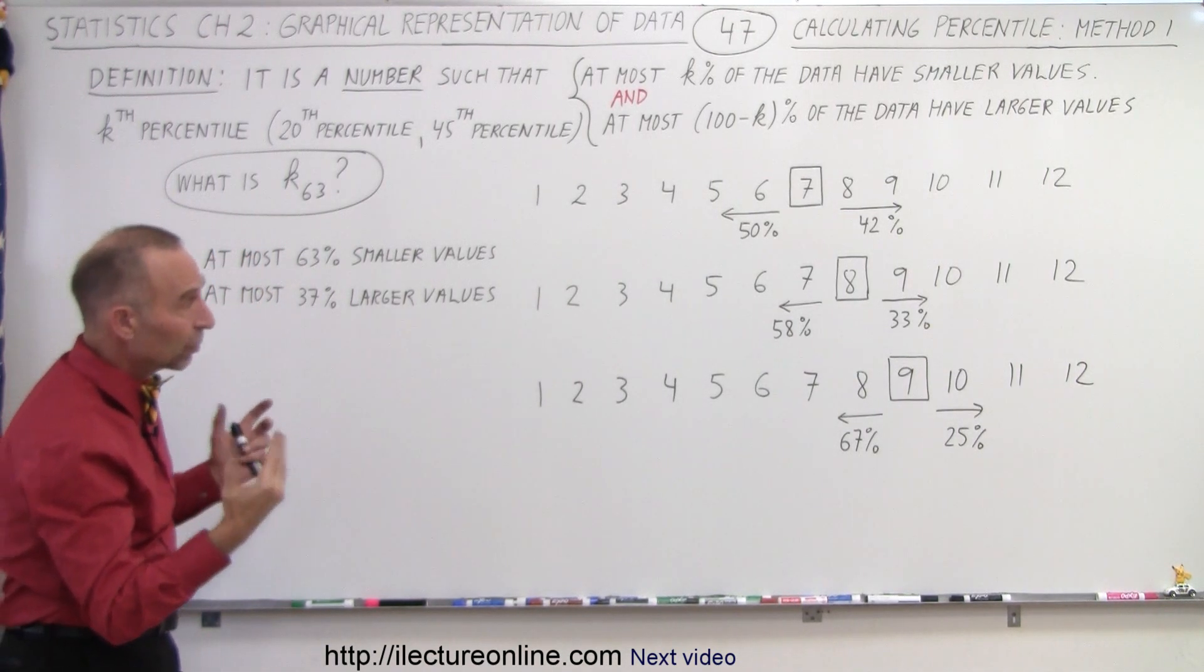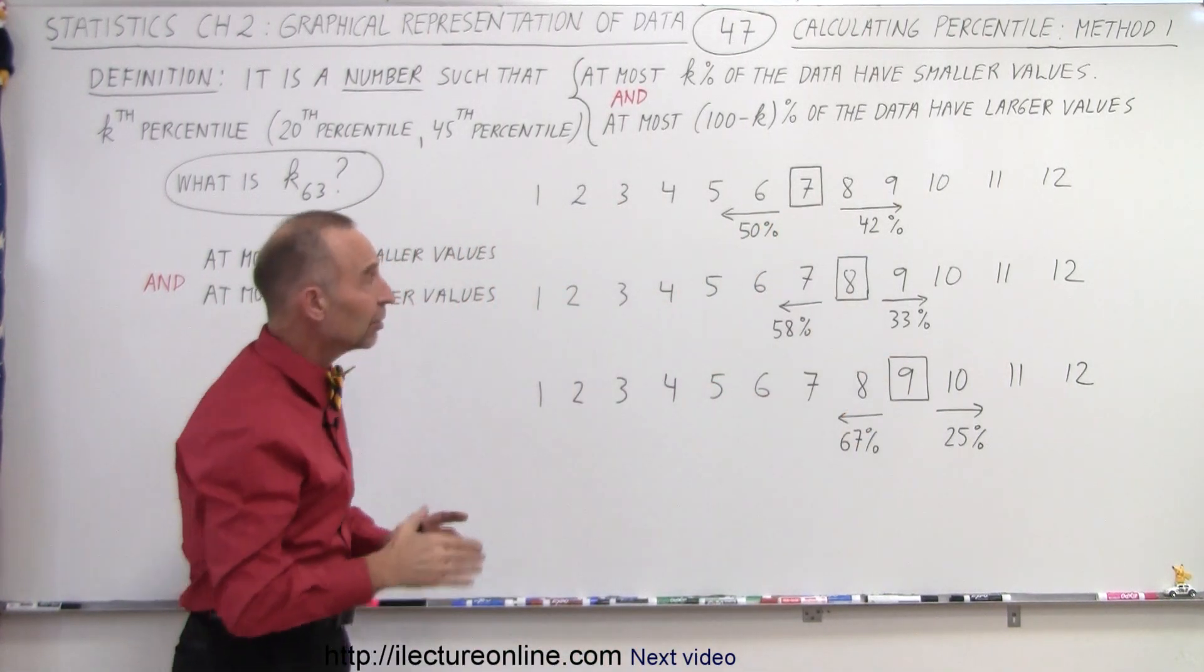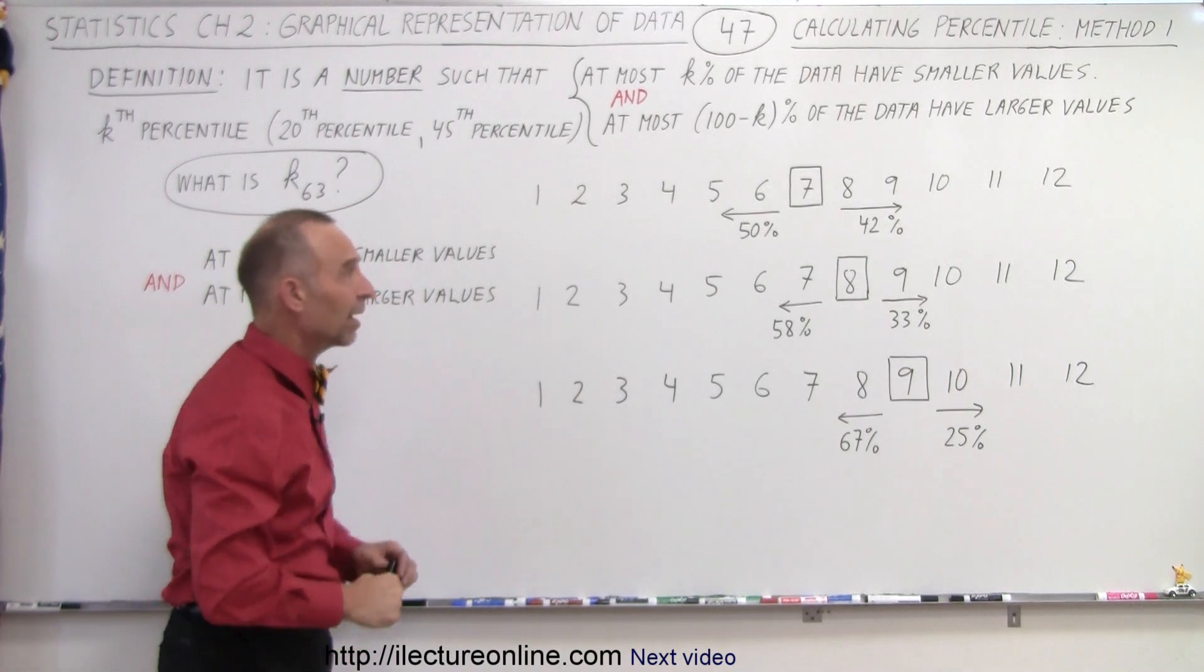And so I picked three possible points, 7, 8, and 9, as being the data point, the data value that represents the 63rd percentile.